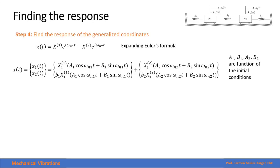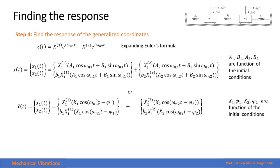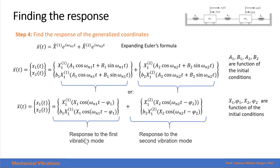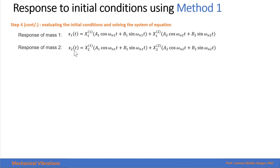Now that we have found the vibration modes, we expand Euler's formula to find the response. The response includes the vibration mode shape multiplied by constants a1, b1, a2, and b2, which are functions of the initial conditions. We can also write this as a single cosine function with a phase angle. The first part of the expression is the response to the first vibration mode, and the second part is the response to the second vibration mode. The vector equation leads to two scalar equations.